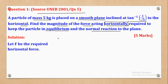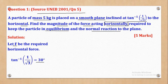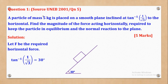The first thing to do is to make a sketch. Let F be the required horizontal force. The angle will be arctan of 1 over root 3, which is 30 degrees. Therefore, we can place our particle on an incline of 30 degrees. We have to remember that the mass is 5 kilograms, therefore the weight is 5G acting vertically downwards.